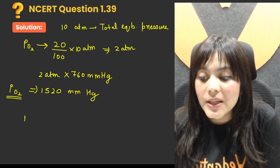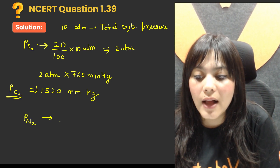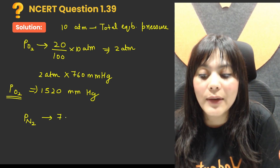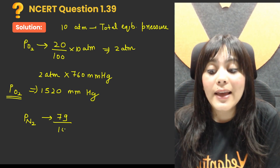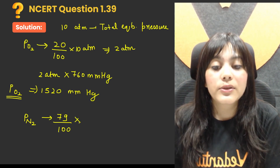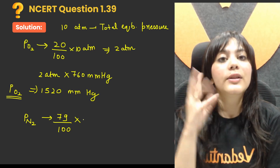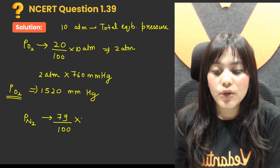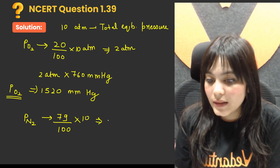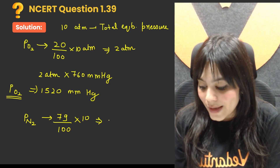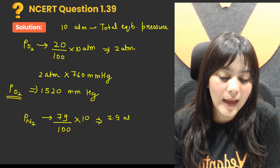Similarly, we can find the partial pressure of nitrogen. Nitrogen is 79% of the atmosphere. Now 79% of 10 ATM will also be nitrogen's composition. So 79/100 × 10 gives us 7.9 ATM for the partial pressure of nitrogen.